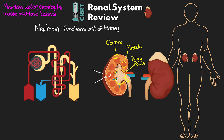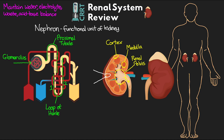Let's go through the different parts of the nephron. First is the glomerulus — a large capsule-like structure surrounded by a membrane called Bowman's capsule. Coming out of the glomerulus is the proximal tubule, followed by the loop of Henle, which has three sections: the thin descending loop, thin ascending loop, and thick ascending loop. From there we go to the distal convoluted tubule, then finally into the collecting tubule and collecting duct.